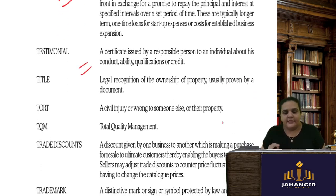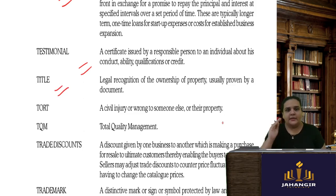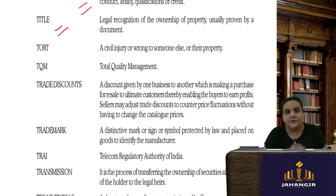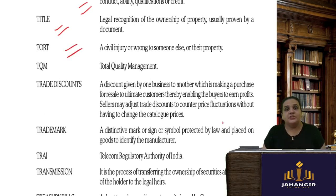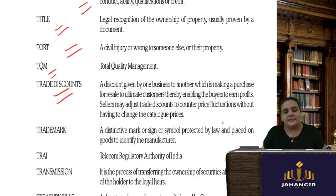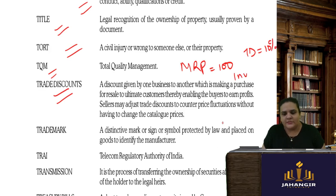A testimonial is a certificate issued by a responsible person about qualities or qualifications. Title is the legal ownership recognition — a document giving you the title of ownership. Tort is a civil injury — a wrong done by a person in civil law. TQM stands for Total Quality Management. Trade discount is a discount given on the invoice price — if the MRP is Rs. 100 and trade discount is 10 percent, the invoice is made at Rs. 90, and cash discounts can be given on top of that.